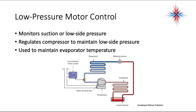Low-pressure motor controls monitor the suction side — the low-pressure side. They're used to regulate temperature and maintain a low-side pressure. They are sometimes used to maintain evaporator temperatures. If we know the boiling point of the refrigerant, we can use the pressure-temperature equivalent to set a low-pressure control to turn the compressor on and off in order to maintain evaporator temperature.